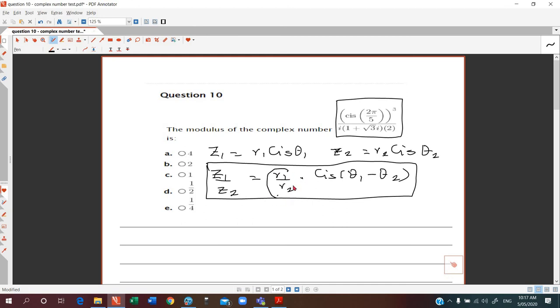Basically, this is the modulus you don't need to worry about. The argument is not necessary, but let's do it. So our z1 is cis(2π/3) to the whole 3. Now using de Moivre's theorem, the modulus is 1. What is de Moivre's theorem? If z equals r cis θ, then z raised to n is r raised to n cis(nθ).